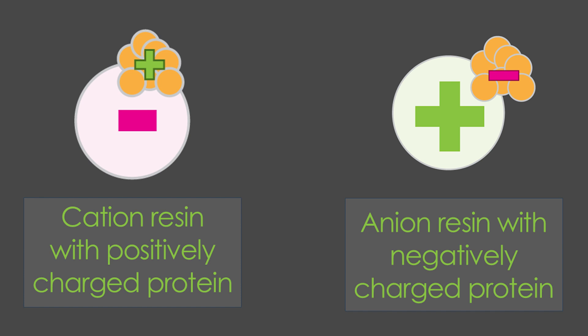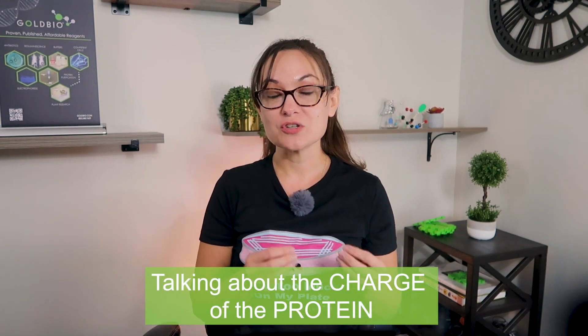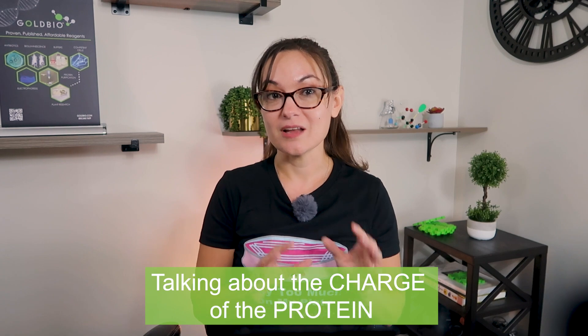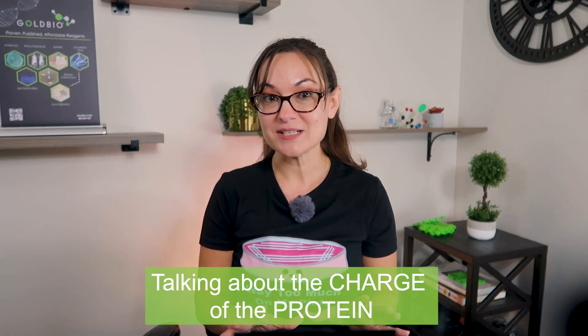Anion exchange resins are the opposite. These resins bind negatively charged proteins, and in order for them to do that — because opposites attract — the resin itself has to be positively charged. Just remember: when talking about cation versus anion, we're talking about the charge of the protein that you're purifying, not the charge of the resin.